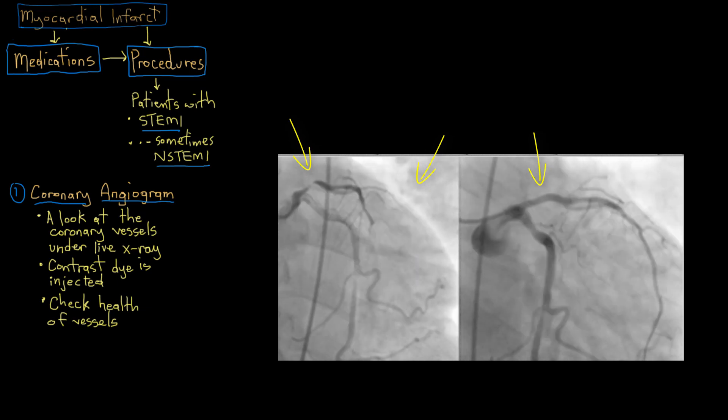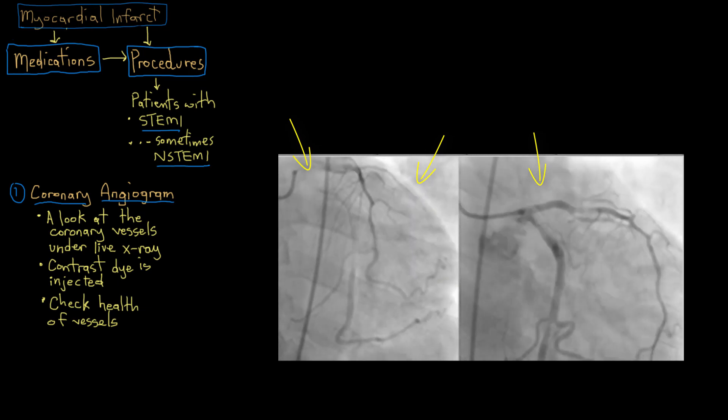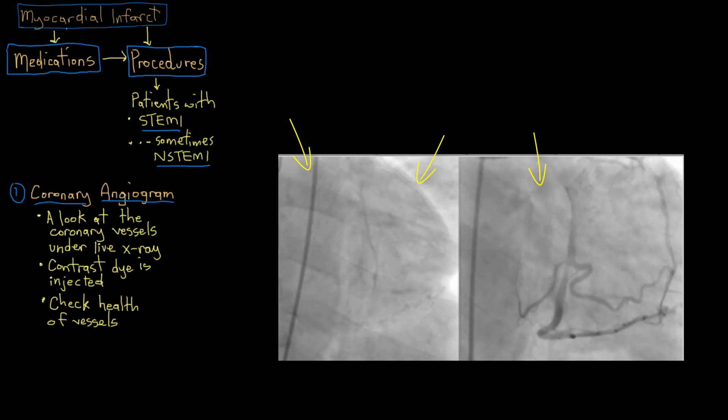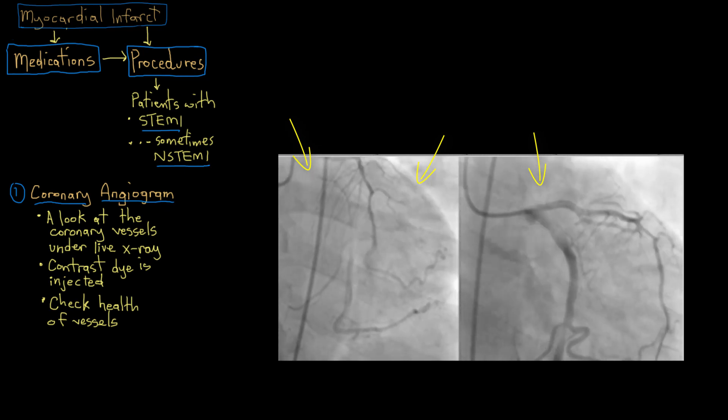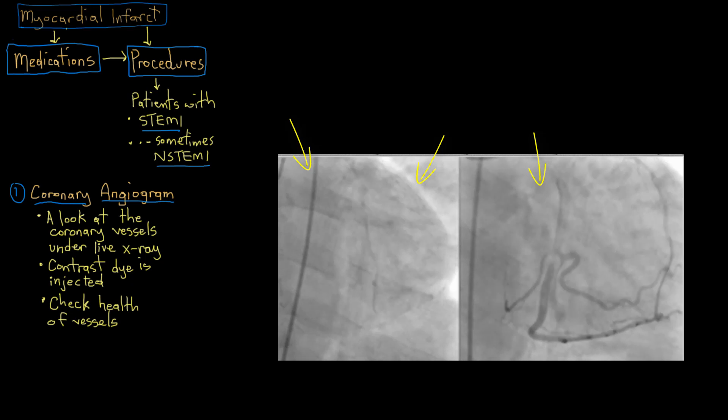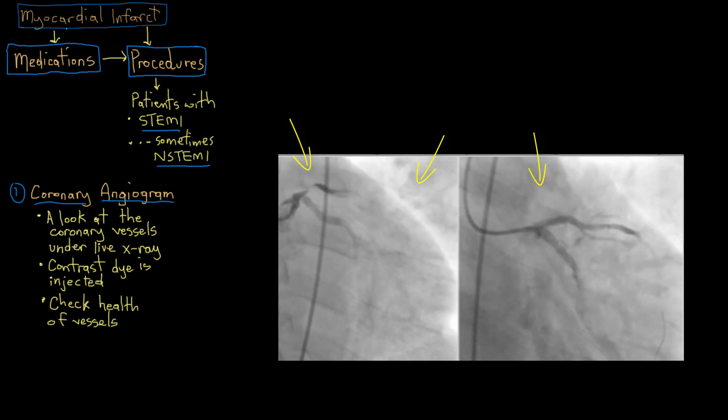So depending on how bad the clogging is inside a given person's coronary arteries, the cardiologist will then go on to make a recommendation for what procedure to move onto next to fix the underlying problem with someone's heart. So let's actually have a look at a few of these procedures.